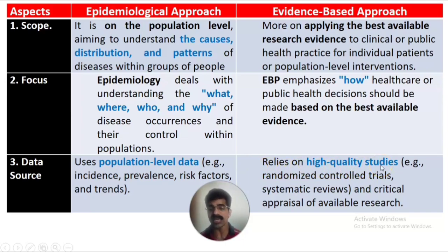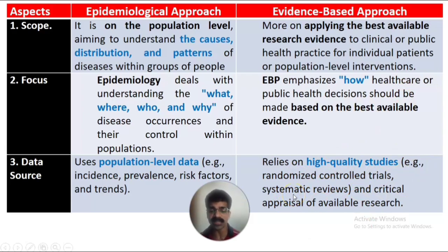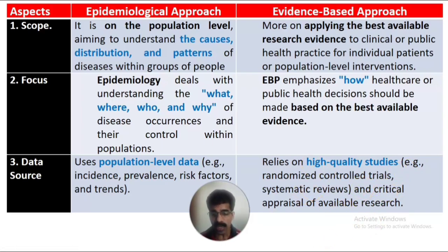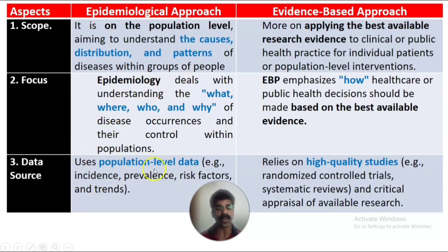Whereas the data source in the evidence-based approach relies mainly on high-quality studies. Examples include randomized controlled trials where randomization is applied, systematic reviews of systematic studies, and critical appraisal of available research — where after the study, a critical analysis or monitoring of the results is conducted. So the data source in epidemiological approach is from the population level, while evidence-based approach relies on high-quality studies conducted in the community.